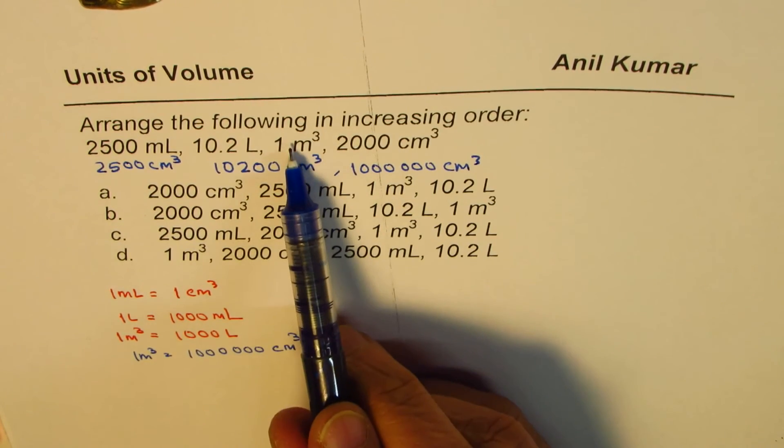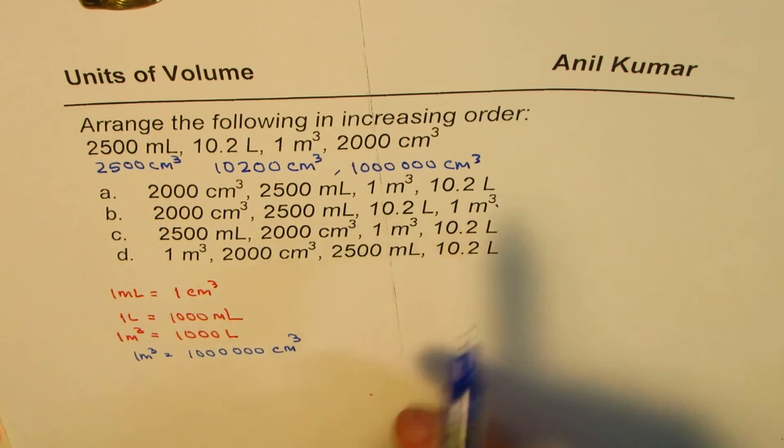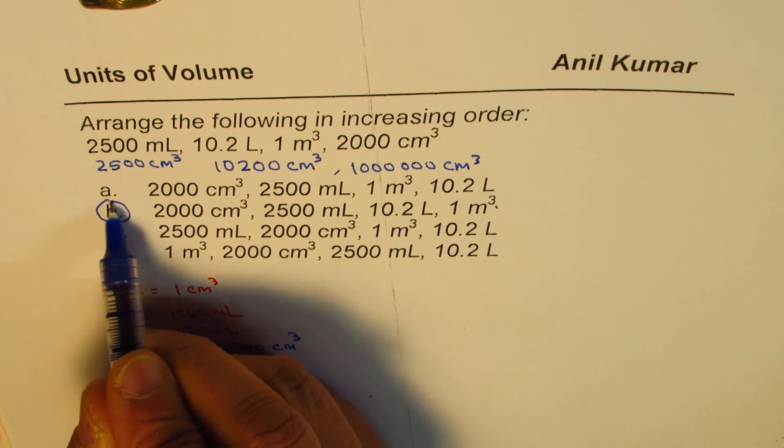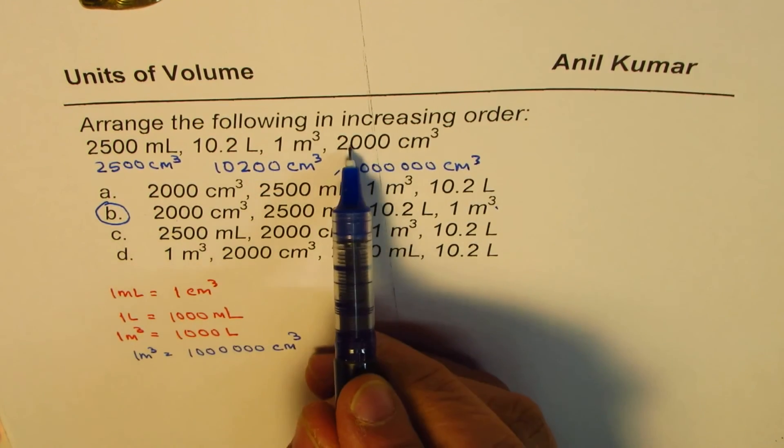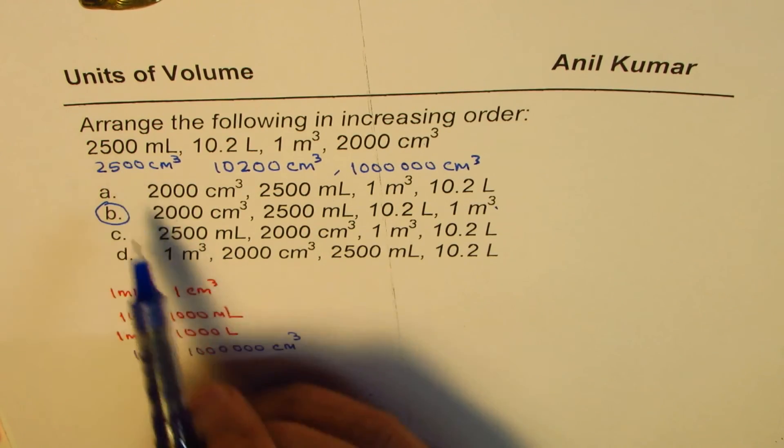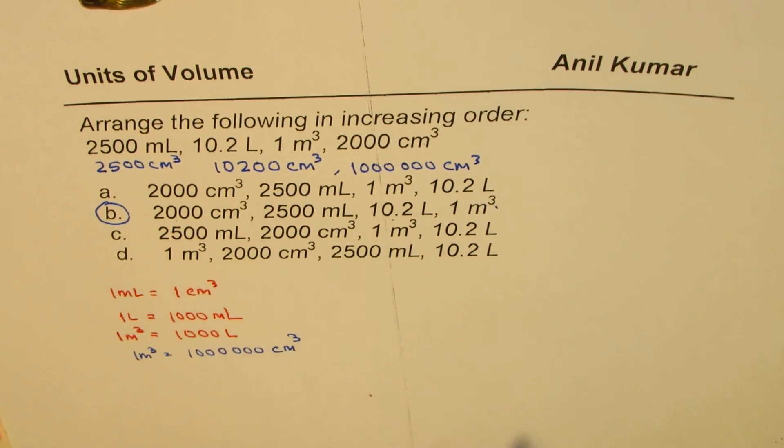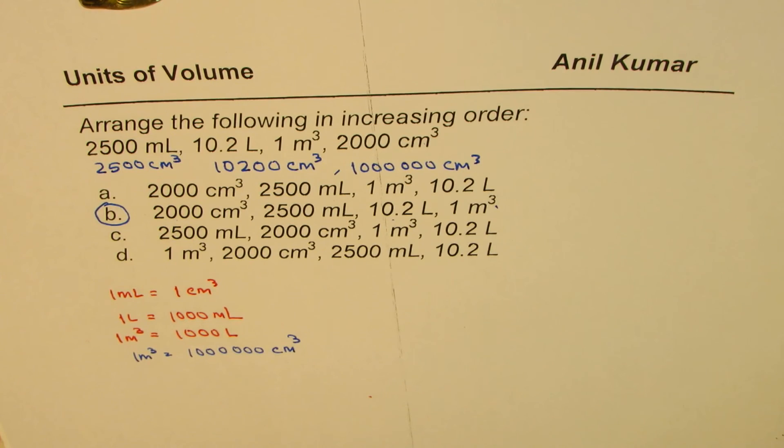So amongst this, meter cube is the largest, so that should come at the end. So this one seems to be the right answer. Lowest is 2000 centimeter cube, then 2500, and then 10.2 liters.